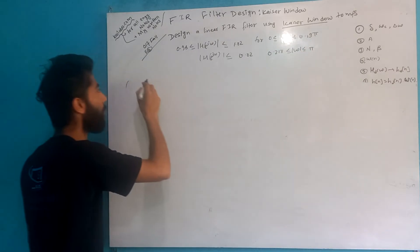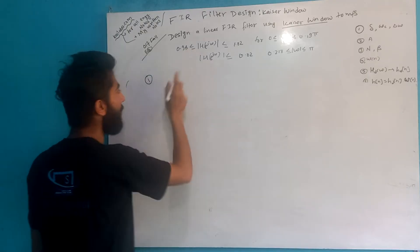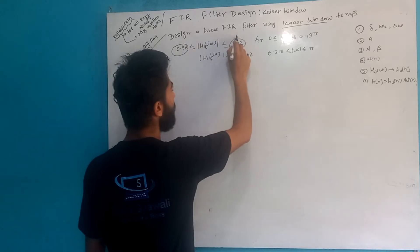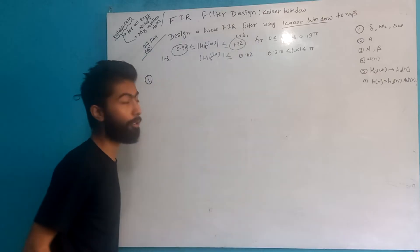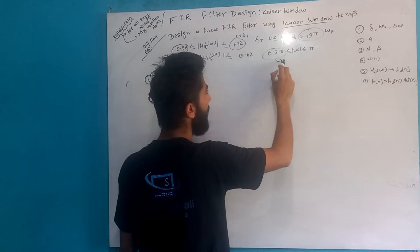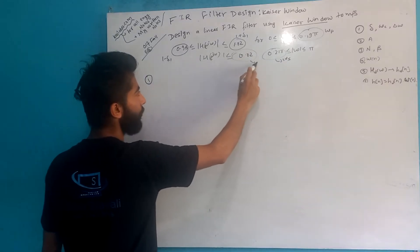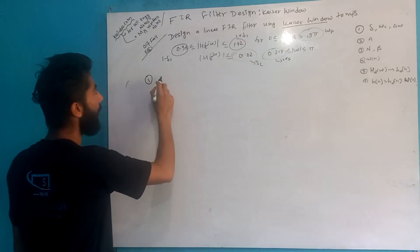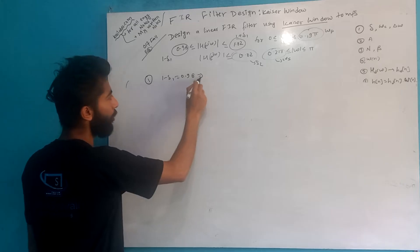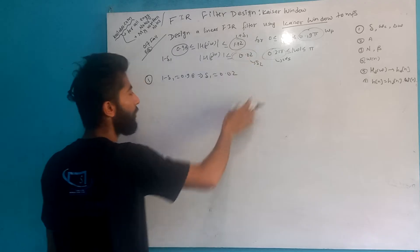I am going to follow the final solution. In Step 1, I am going to define delta. This is 1 minus delta_1, this is 1 plus delta_1. For omega_p and omega_s, this is delta_2. Now, 1 minus delta_1 is 0.98, so delta_1 equals 0.02.